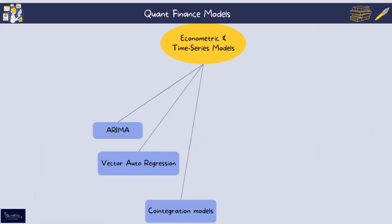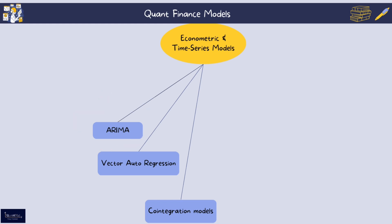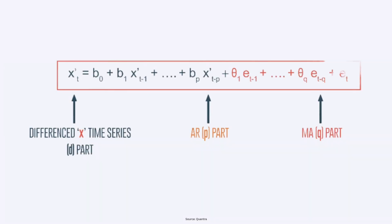Next, time series and econometric models. The most common is ARIMA — a combination of the Auto Regressive (AR) and Moving Average (MA) models. ARIMA is a statistical model used for analyzing and forecasting time series data by combining auto-regression, differencing to achieve stationarity, and moving averages. It is particularly effective for short-term forecasting.